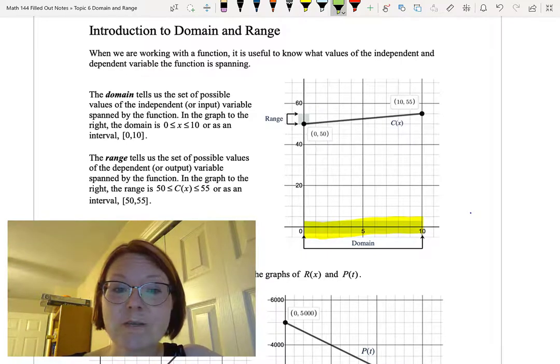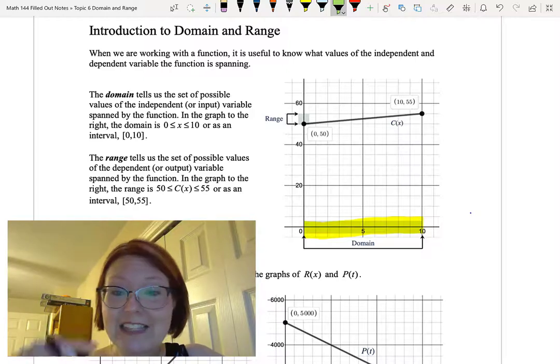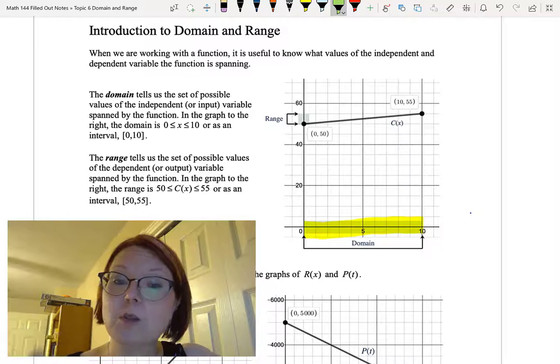The range tells us the set of possible values of the dependent or output variable spanned by the function. In this case the range is very small. It goes from a y value of 50 to a y value of 55.